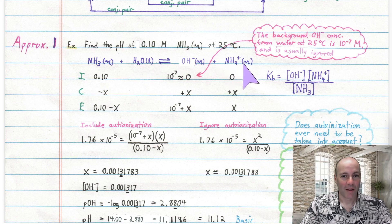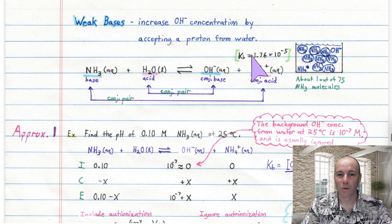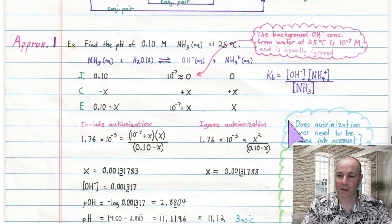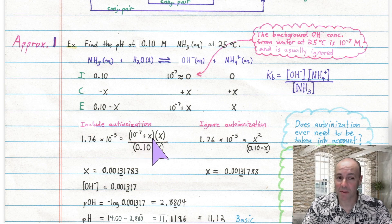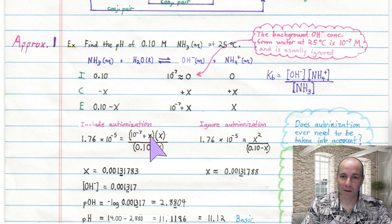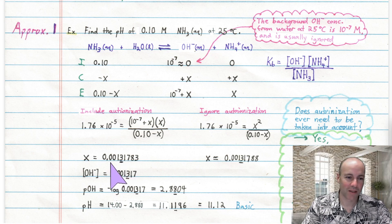This equilibrium has a corresponding equilibrium constant expression — product concentrations over reactant concentration. Substitute the equilibrium concentrations into that expression, along with the Kb of 1.76 × 10⁻⁵. Everything is plugged in, giving a nasty-looking equation to solve for X, with the 10⁻⁷ + X in the numerator. We're including the autoionization of water here. Solving carefully gives X = 0.0013.